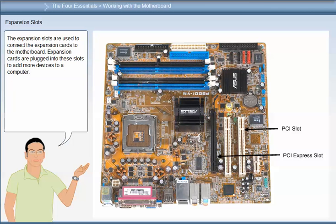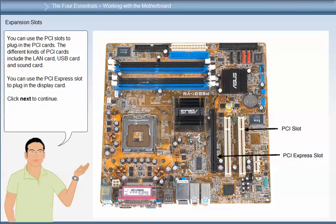The expansion slots are used to connect the expansion cards to the motherboard. Expansion cards are plugged into these slots to add more devices to a computer. You can use the PCI slots to plug in PCI cards, which include the LAN card and USB card. You can use the PCI Express slot to plug in the display card.